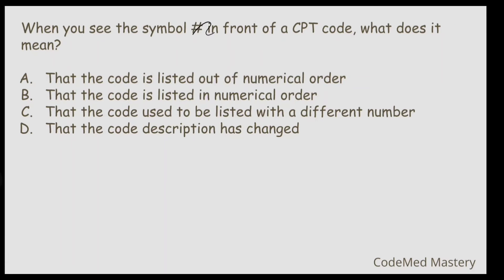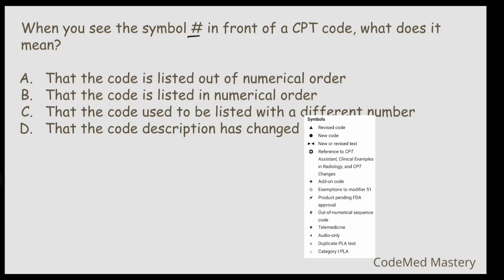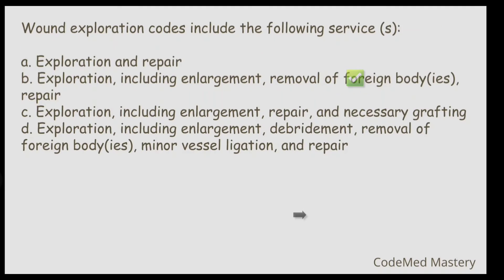Next question: When you see the symbol hash (#) in front of a CPT code, what does it mean? Option A: the code is listed out of numerical order. Option B: the code is listed in numerical order. Option C: the code used to be listed with a different number. Option D: the code description has changed. When you open your CPT book, the symbols list shows that the hash symbol indicates a resequenced code — listed out of numerical order. The right answer is option A.